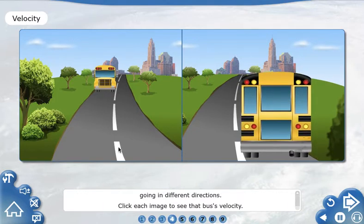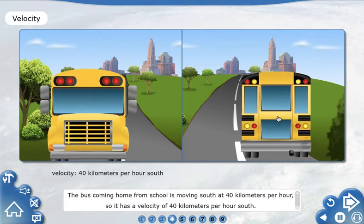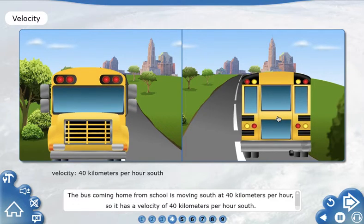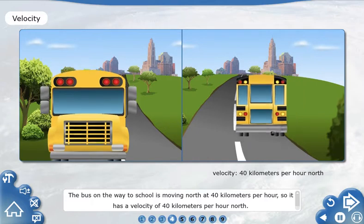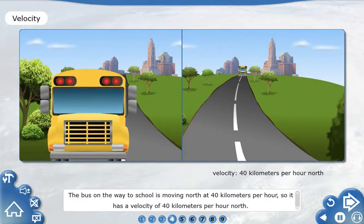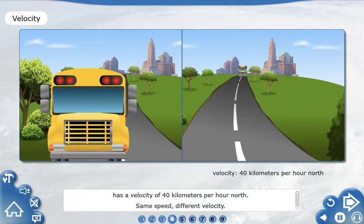Click each image to see that bus's velocity. The bus coming home from school is moving south at 40 kilometers per hour, so it has a velocity of 40 kilometers per hour south. The bus on the way to school is moving north at 40 kilometers per hour, so it has a velocity of 40 kilometers per hour north. Same speed, different velocity.